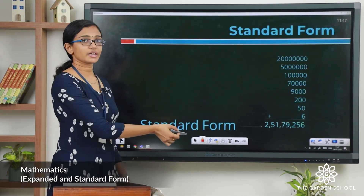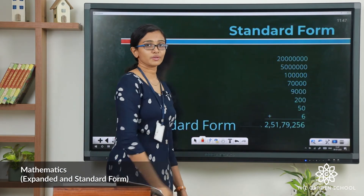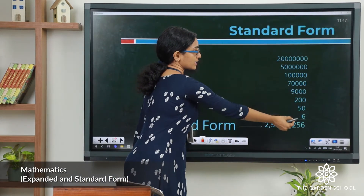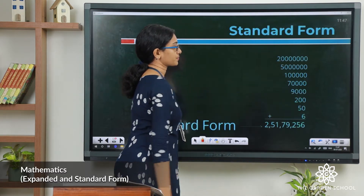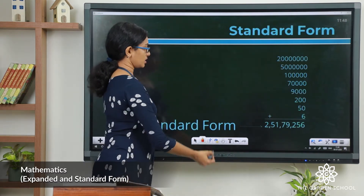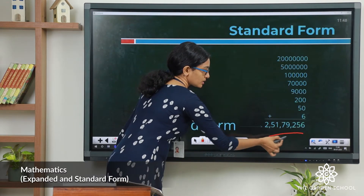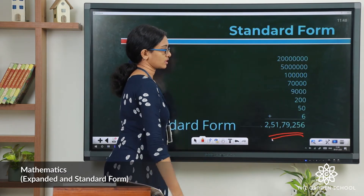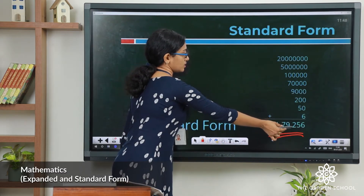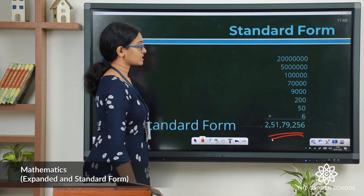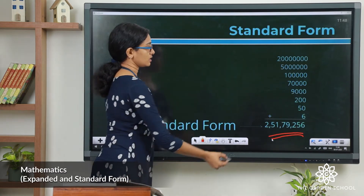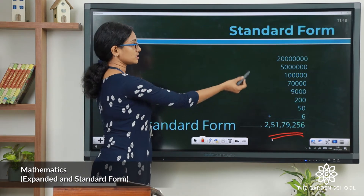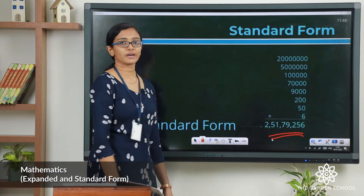See this example — these are the place values from the previous expanded form. I have arranged them vertically in appropriate columns. Now the answer you get is shown here. I have also inserted commas in between, so this resulting number is the standard form of this expanded form.